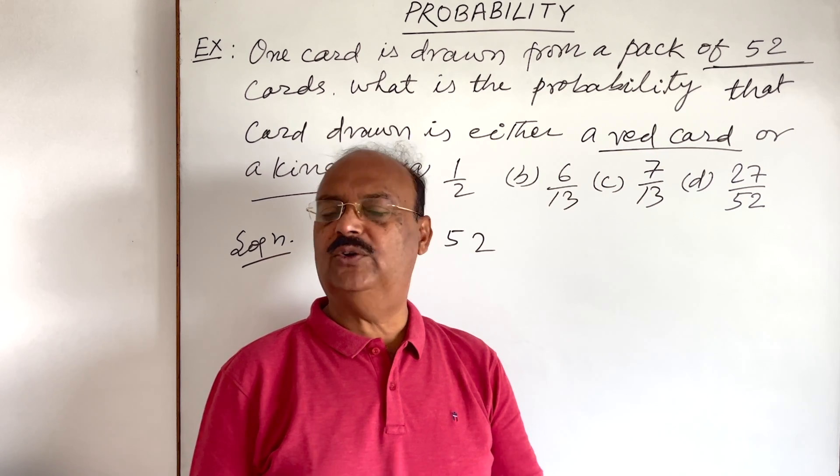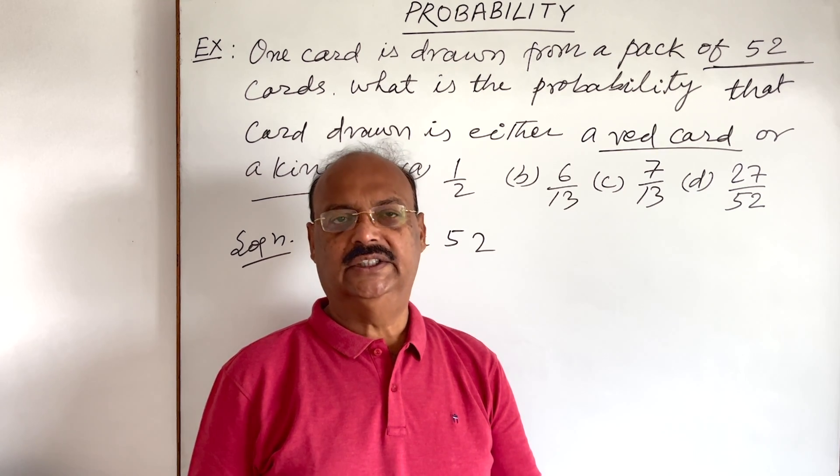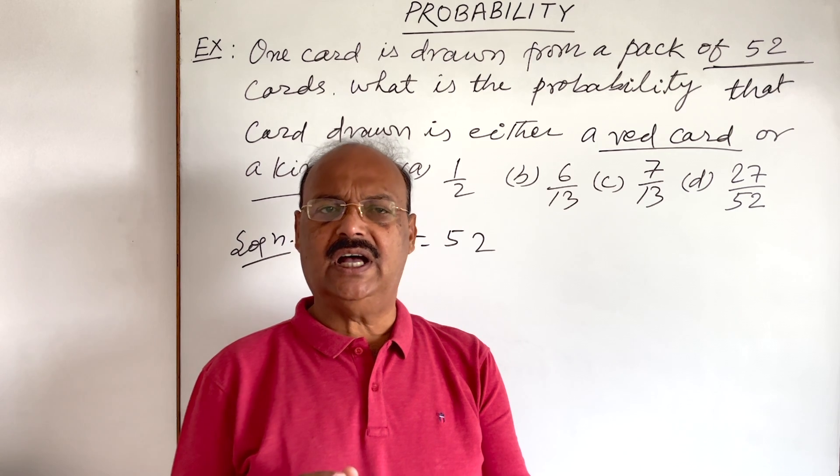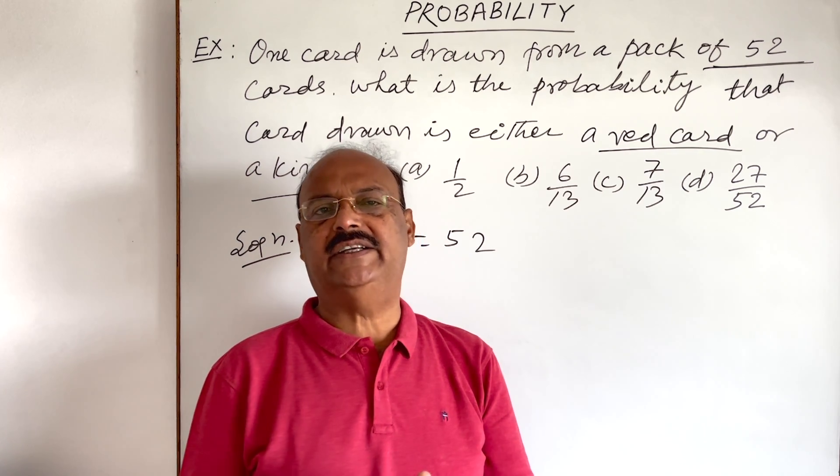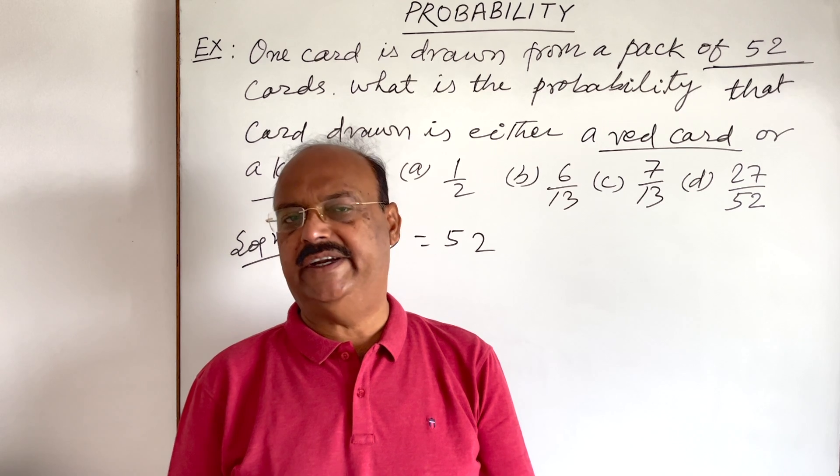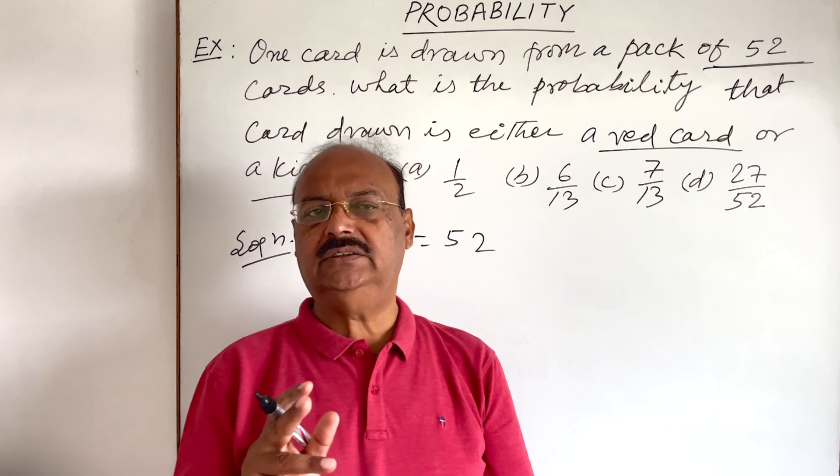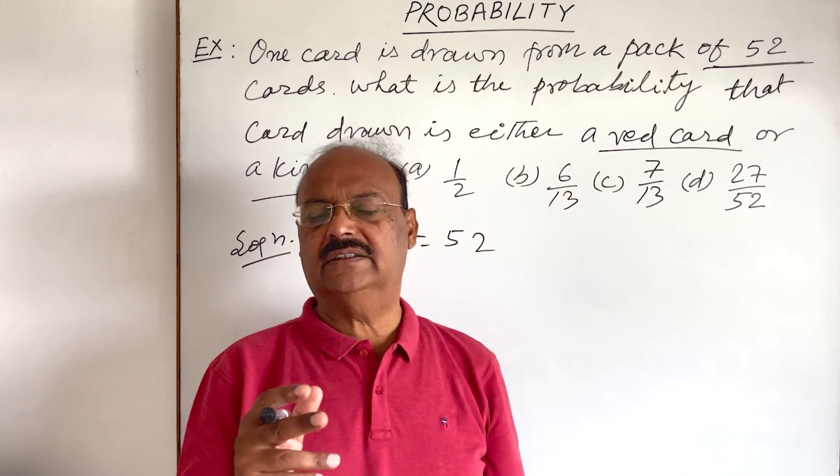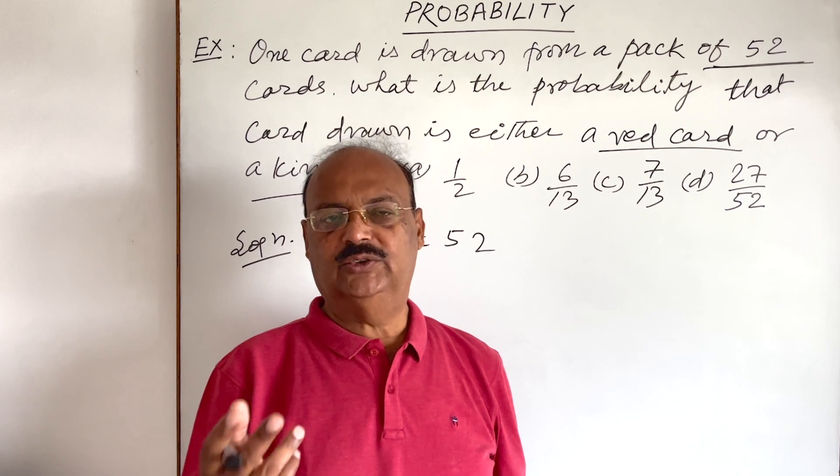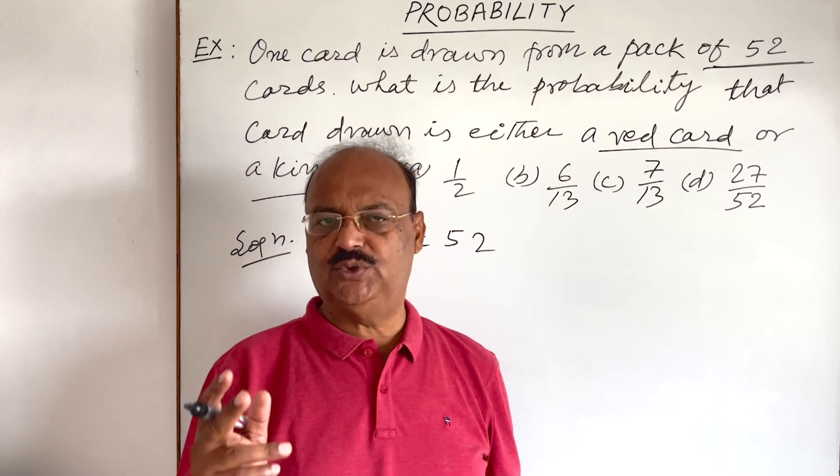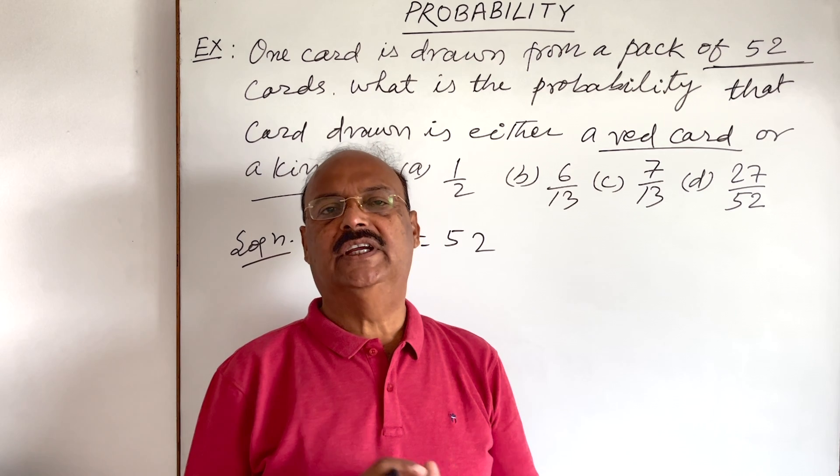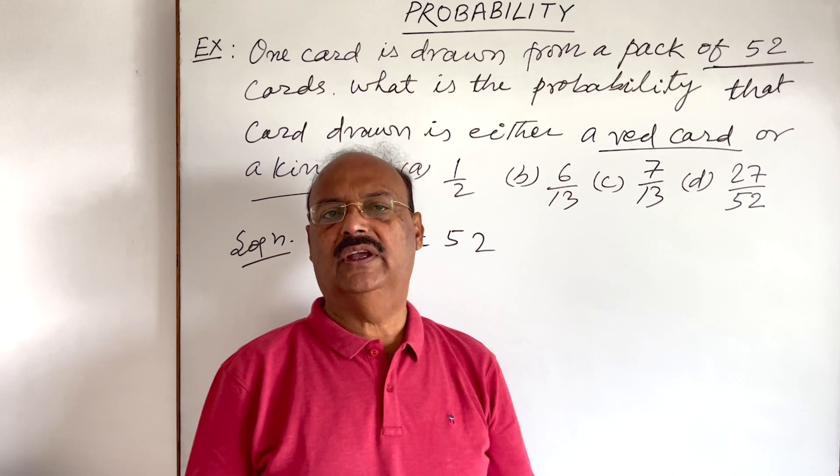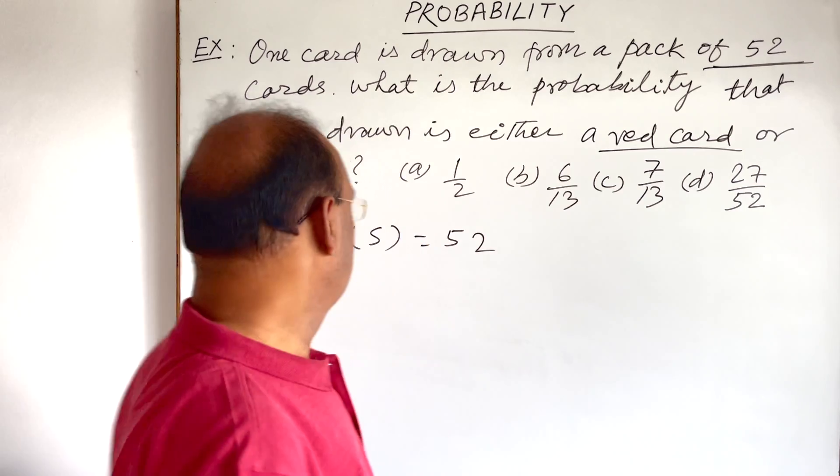And how many kings in total? Four kings. So two kings are already included in the set of 26 red cards. So remaining two black kings are available.